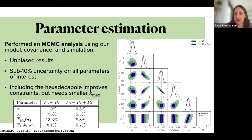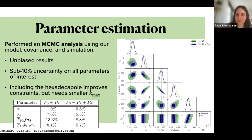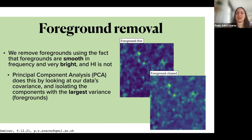From MCMC analysis, we find unbiased results up to k of about 0.25 and below 10% uncertainty on all parameters when including the hexadecapole. With just the monopole and quadrupole, the same k is fine with slightly larger uncertainties. When including the hexadecapole for more constraining power, we restrict the maximum k to about 0.1 because of non-linear effects, but even at that smaller k we improve constraints and get below 10% uncertainty on all parameters.